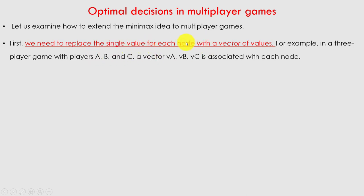We need to replace a single value for each node with a vector of values. There should be a vector of values associated with each node and with each player. For a 3-player game, if ABC are the three players, then the vectors will be VA, VB, and VC associated with each node. That means node A has vector VA, node B has vector VB, and node C has vector VC.